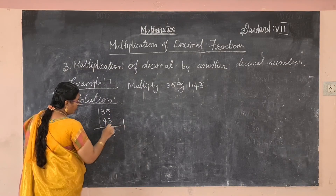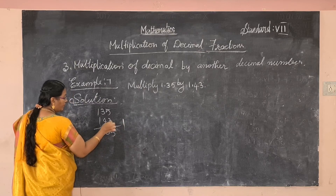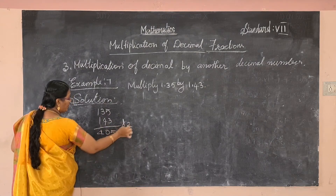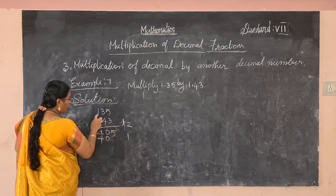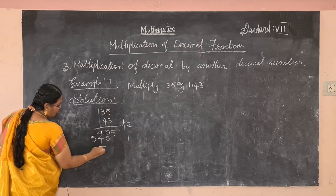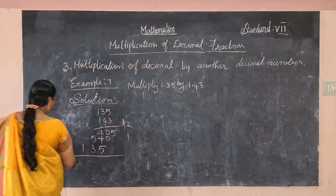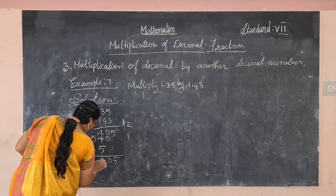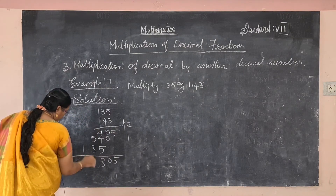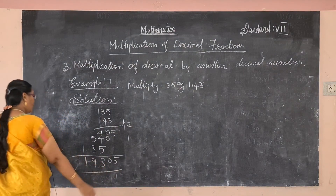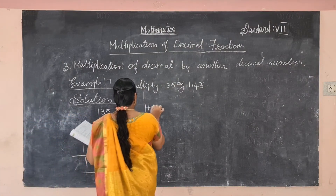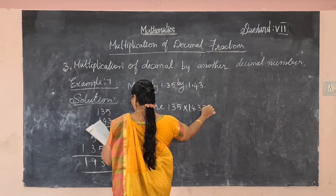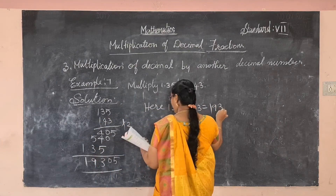Multiply 135 by 143: five 3's are 15, carry 1; three 3's are 9 plus 1 is 10, carry 1; one 3 is 3 plus 1 is 4. Four 5's are 20, carry 2; four 3's are 12 plus 2 is 14, carry 1; four 1's are 4 plus 1 is 5. One 3 is 3; one 3 is 3; one 1 is 1. Adding: 135 into 143 equals 19305.